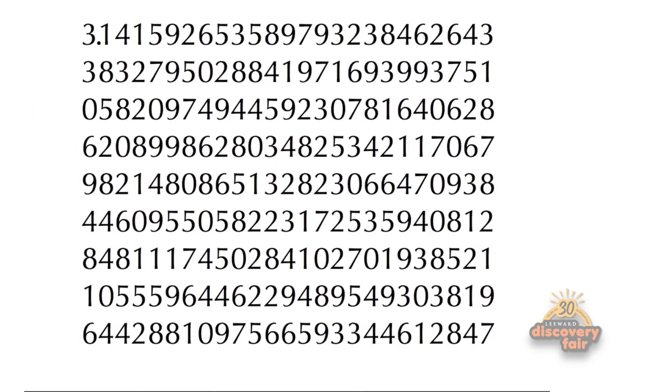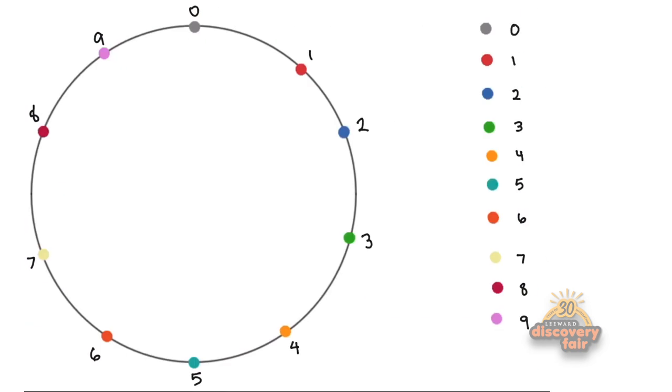Using our printout of the digits of Pi, we're going to connect the first two numbers. In this case, three and one. Since my three is green, I'm going to use my ruler to draw a green line connecting three and one.